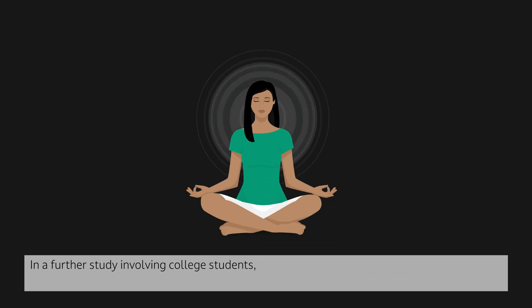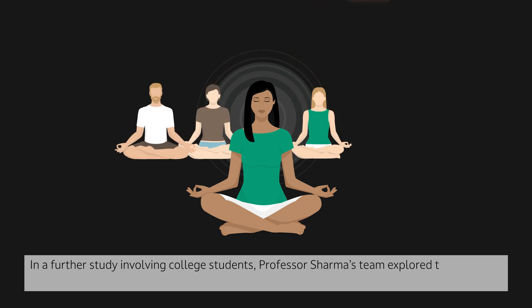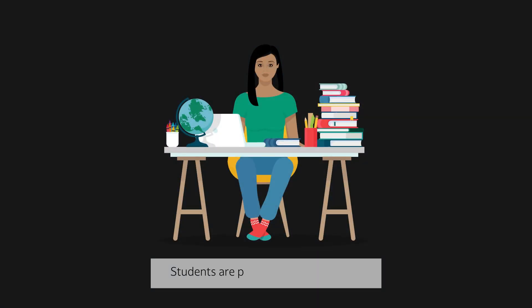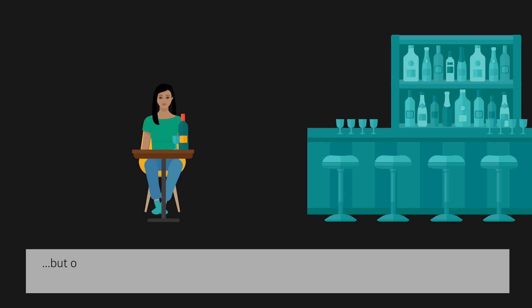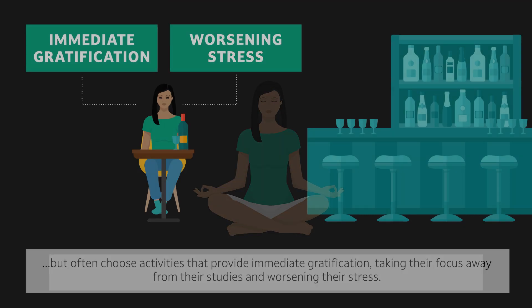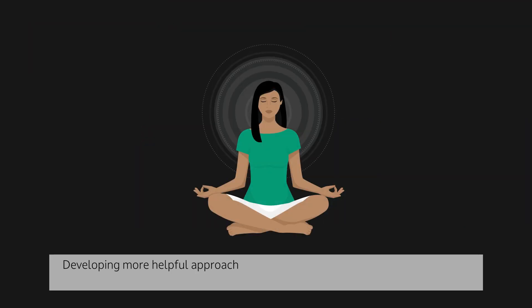In a further study involving college students, Professor Sharma's team explored the impact of introspective meditation — manan dhyana — before undertaking pleasurable activities. Students are prone to chronic stress but often choose activities that provide immediate gratification, taking their focus away from their studies and worsening their stress. Developing more helpful approaches to stress management, such as meditation, could break this maladaptive cycle.